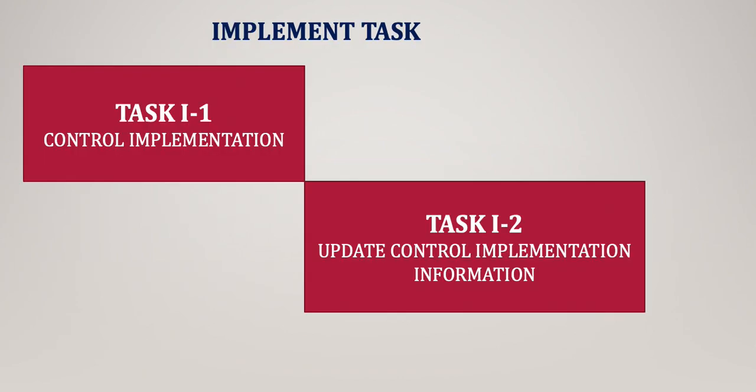Let's look at the tasks under Implement Security Controls. There are two tasks. Task number one is control implementation — go ahead and implement the controls based on either the STIGs or the CIS benchmark. Task number two is to update control implementation information — once you have implemented the control, go ahead and update the implementation information in the SSP, or Security and Privacy Plan, detailing how the control is implemented, how it is functioning, the expected behavior, and the expected output.